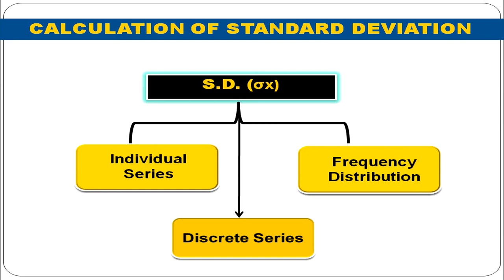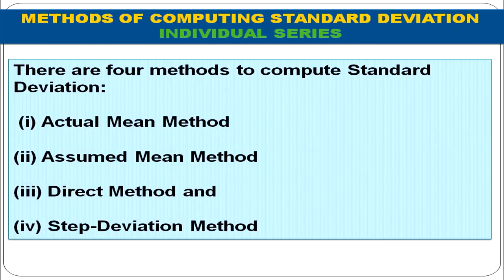When we talk about calculation of standard deviation, we can calculate it from individual series, from discrete series, or from frequency distribution. In the case of individual series, there are four methods: actual mean method, assumed mean method, direct method, and step deviation method. We are going to calculate the deviation from each item using all four methods.